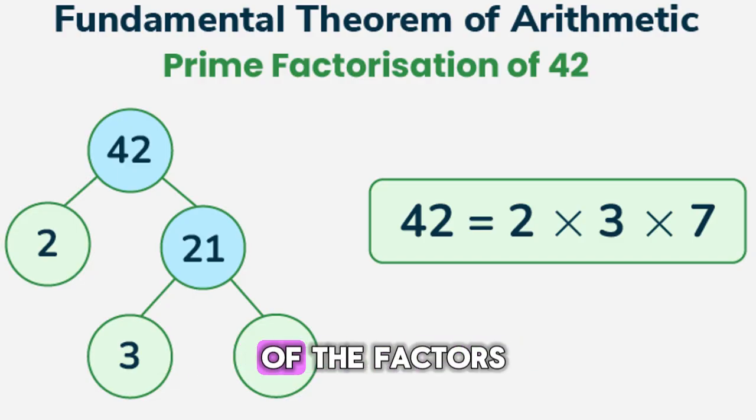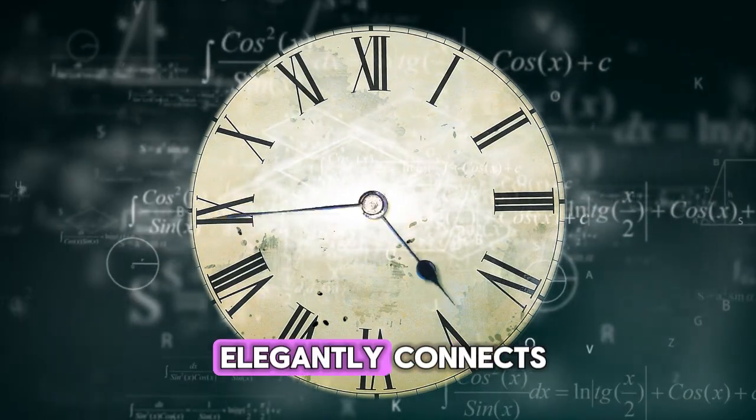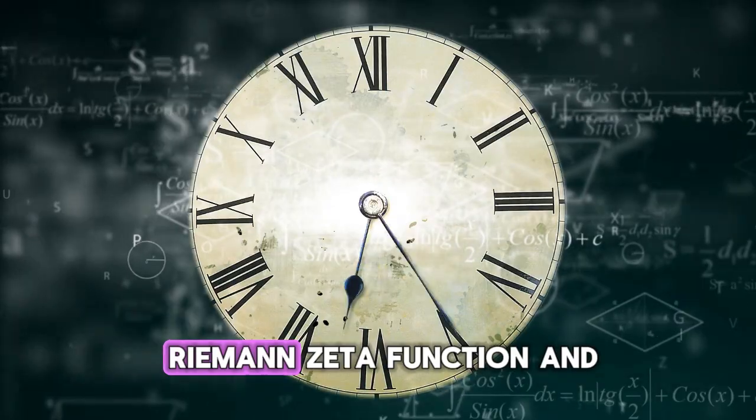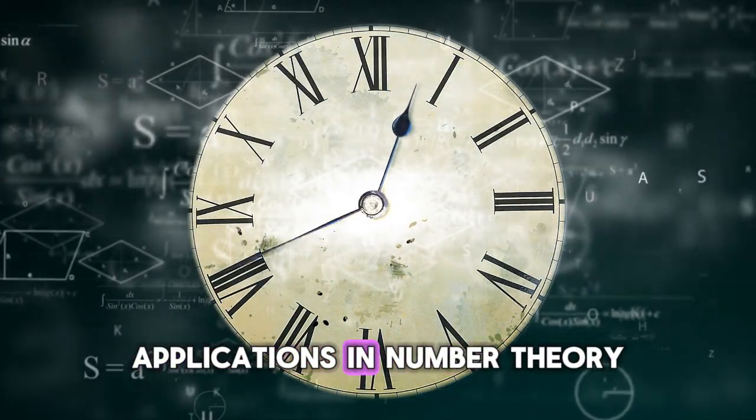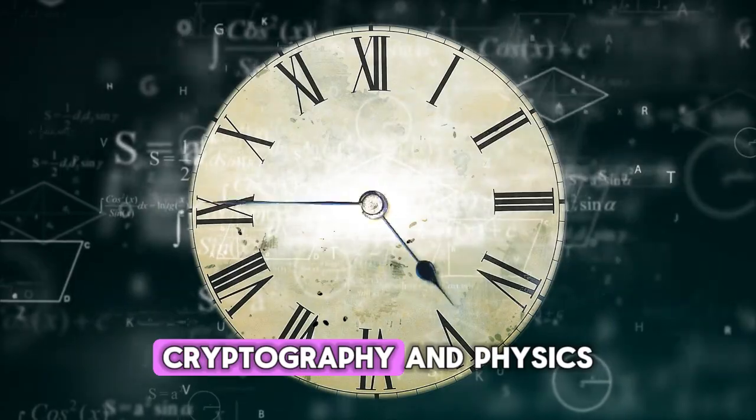In case you don't know, the fundamental theorem of arithmetic states that every integer greater than one is prime or can be represented uniquely as a product of prime numbers, up to the order of the factors. The Euler product formula elegantly connects prime numbers to the Riemann-Zeta function and has significant applications in number theory, cryptography, and physics.